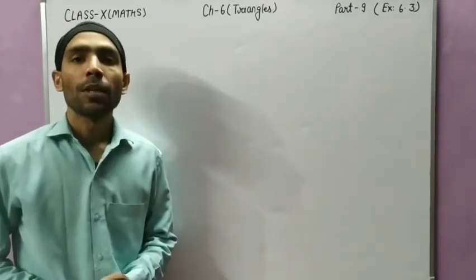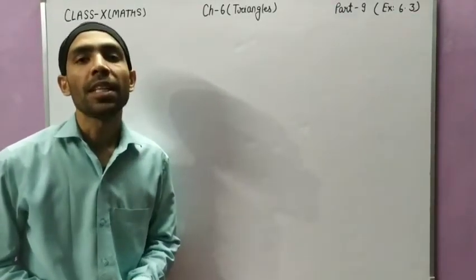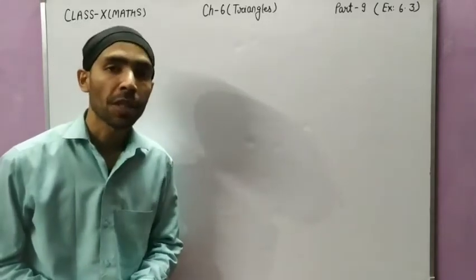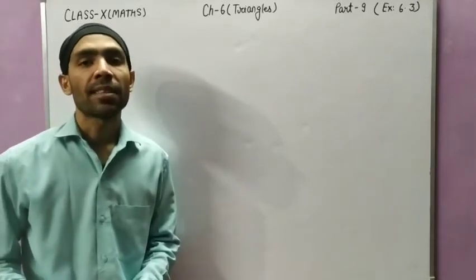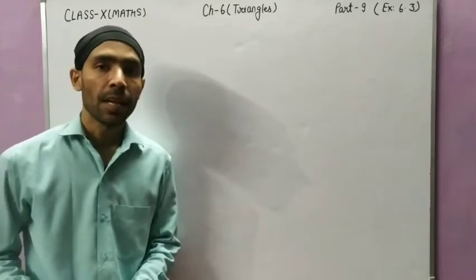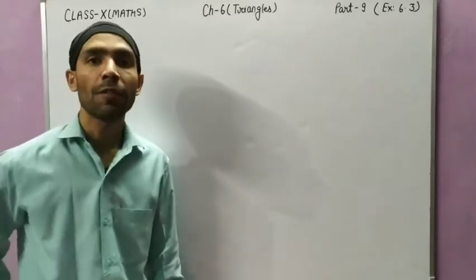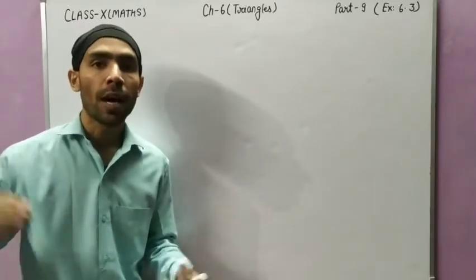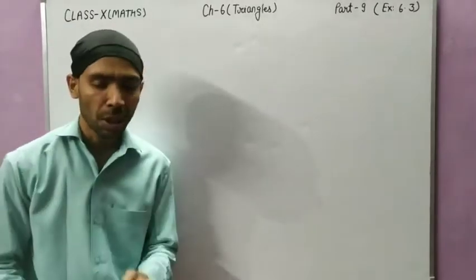Hello students. We are completing Chapter 6, Triangles, of Class 10 Mathematics. This is the last part. We were discussing Exercise 6.3 and up to question number 9 I had discussed. From question number 10 to question number 30 I gave you as homework. From question number 10 to question number 13 is to get.